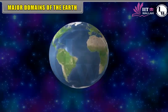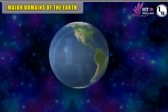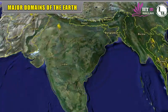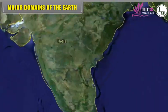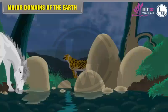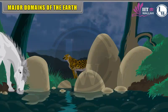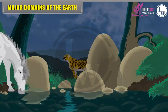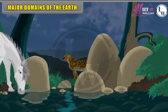Major Domains of the Earth. Our Earth has a unique distinction of being at a reasonable distance from the Sun. The Earth provides a suitable environment which is favourable for the origin and sustenance of all types of life — human life, plant life and animal life.